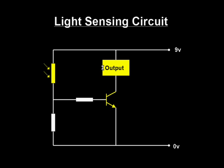Light sensing circuits use a component called a light-dependent resistor. Once again, the light-dependent resistor, or in short, the LDR, is connected to the base of the transistor.